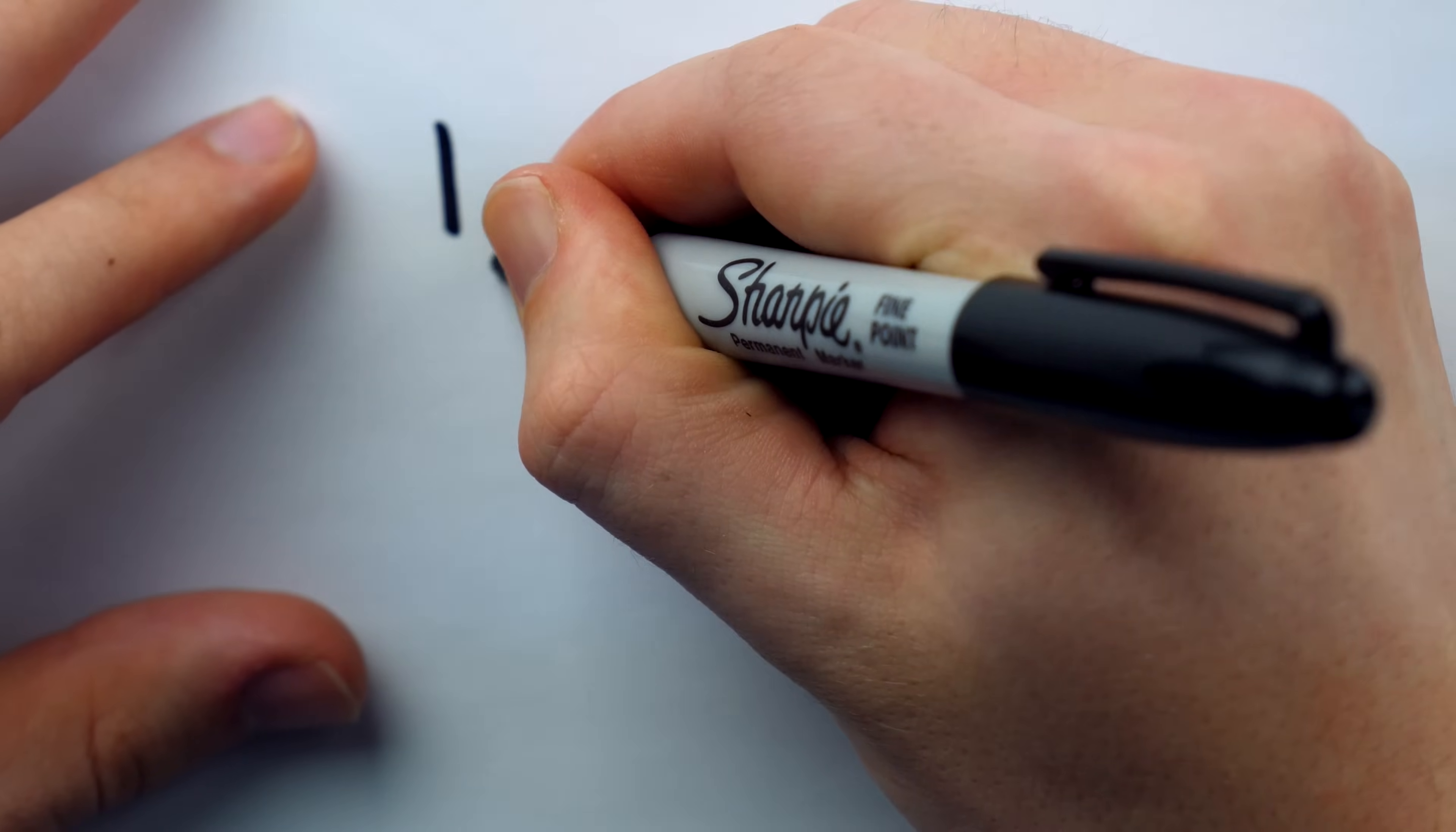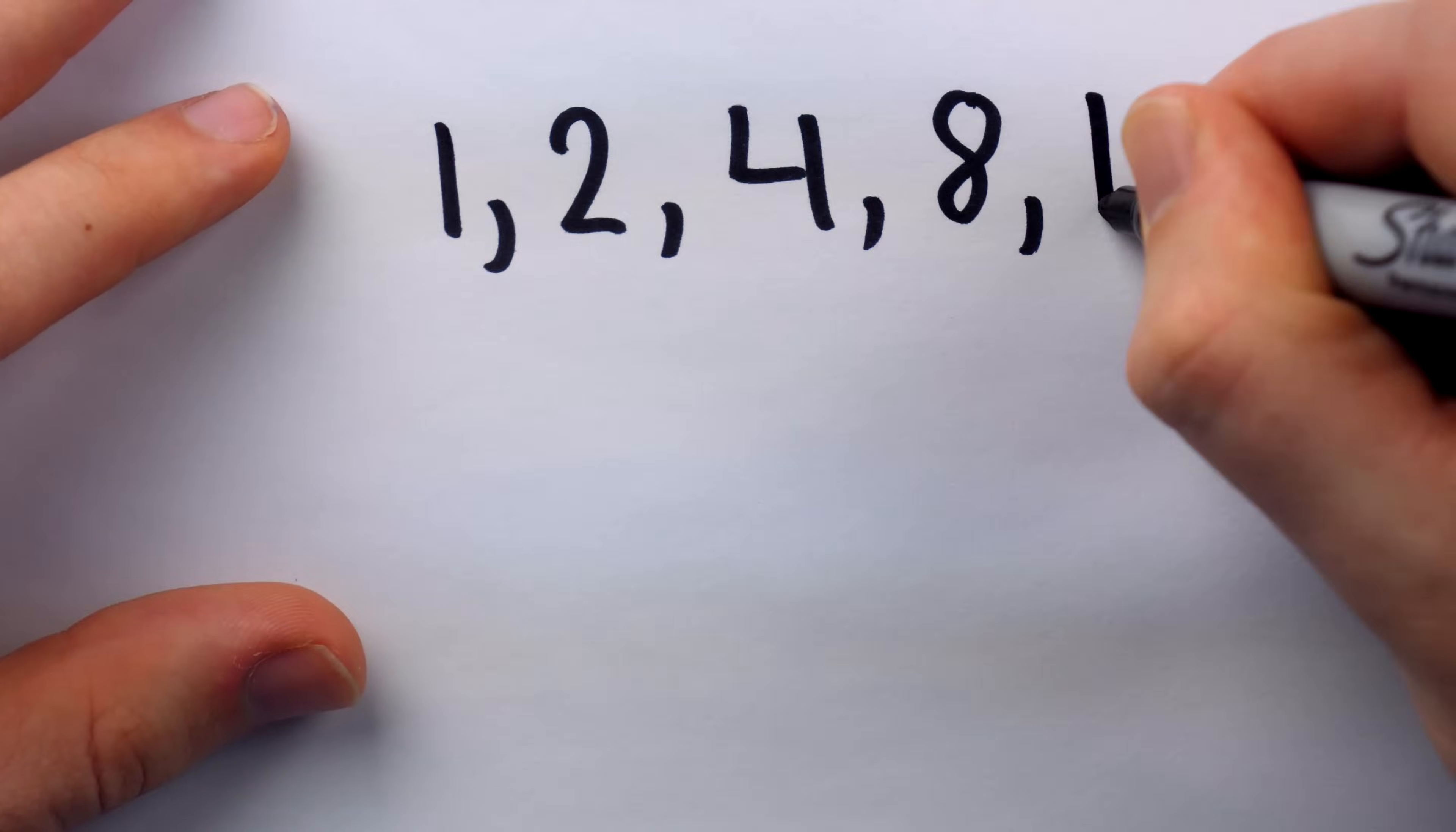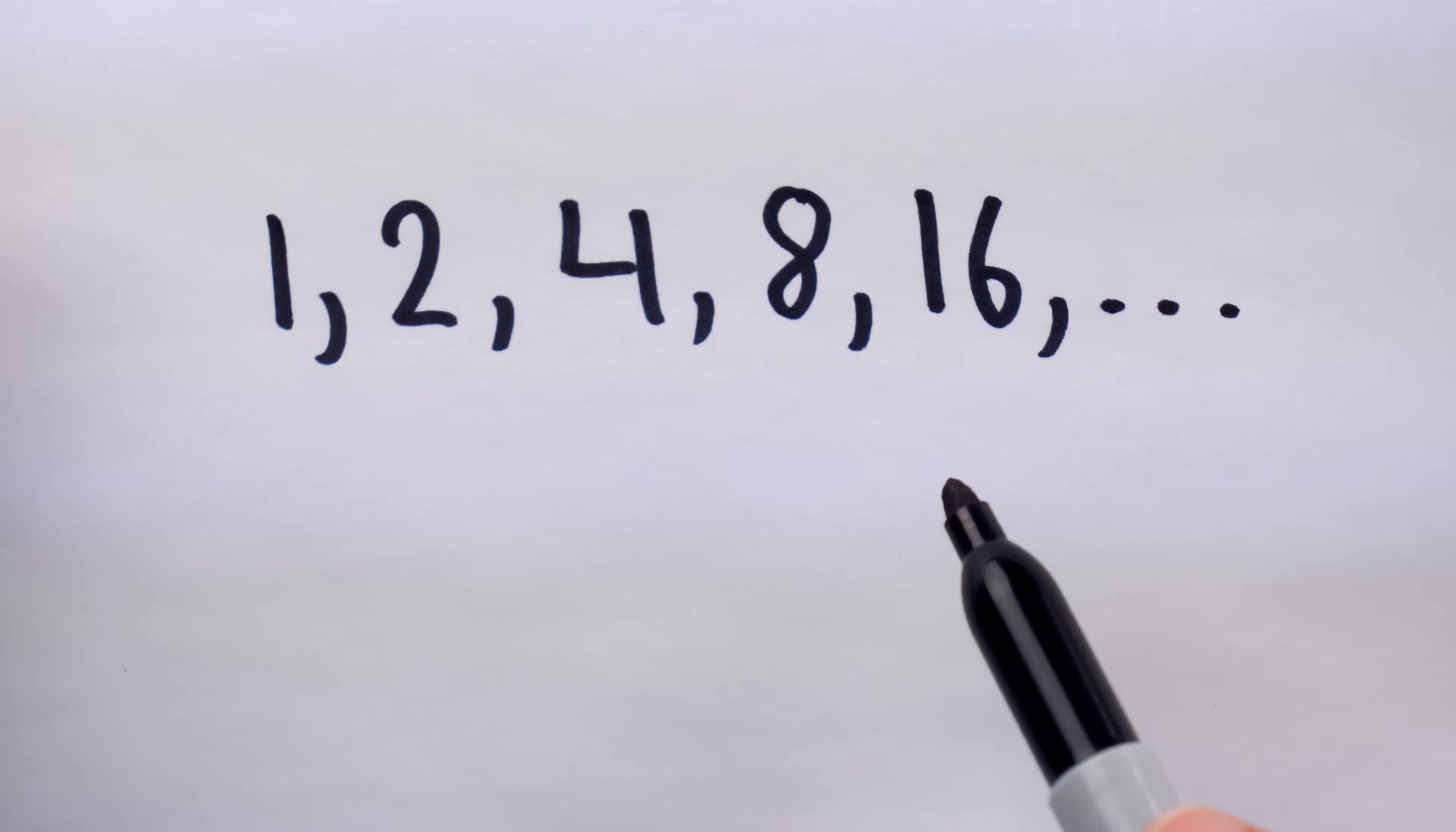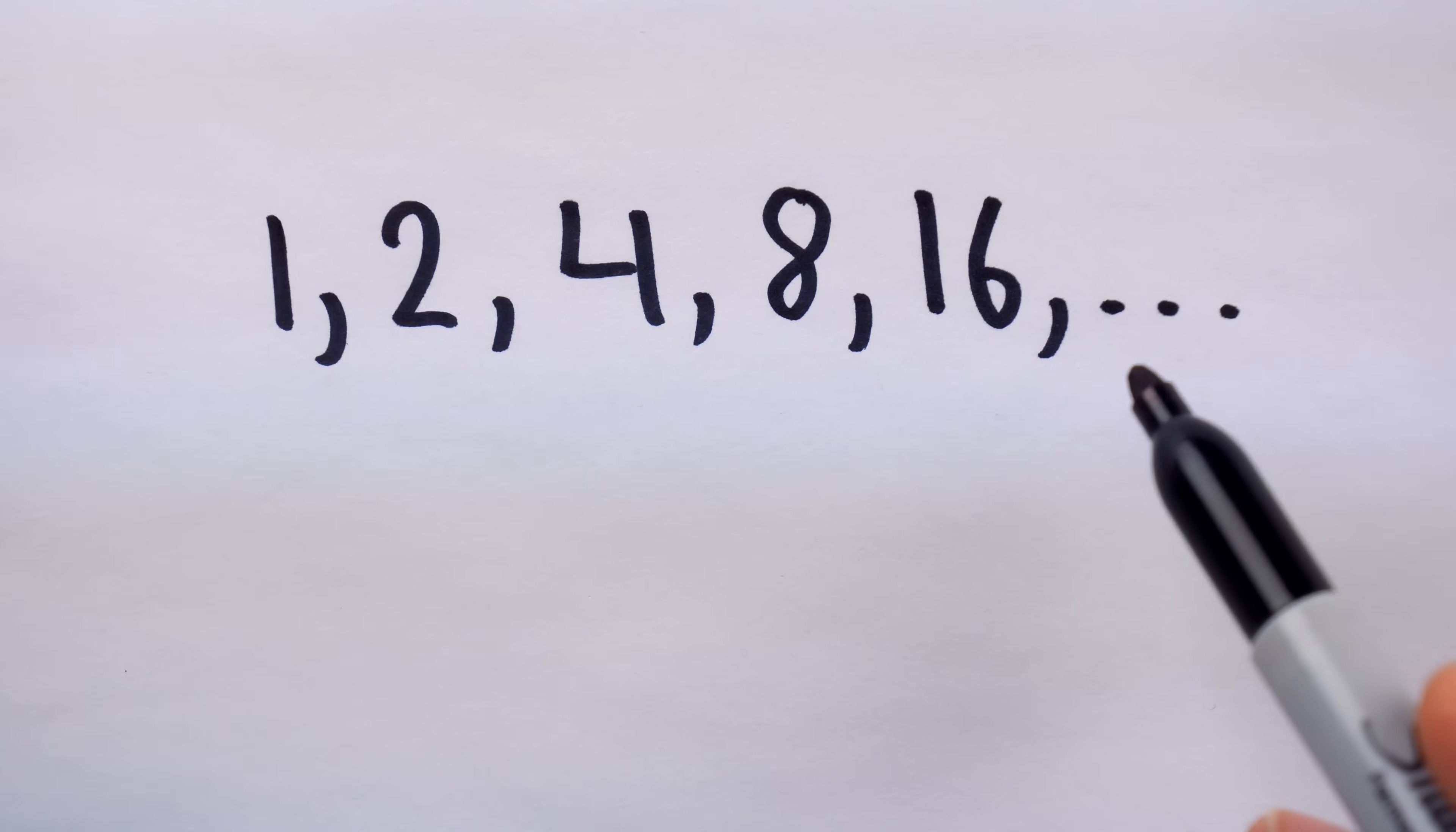For example, it would not be unusual to communicate a sequence to people by writing this: 1, 2, 4, 8, 16, dot dot dot. We haven't explicitly specified this sequence and what term comes next, but most people would look at this sequence and assume that 32 comes next.